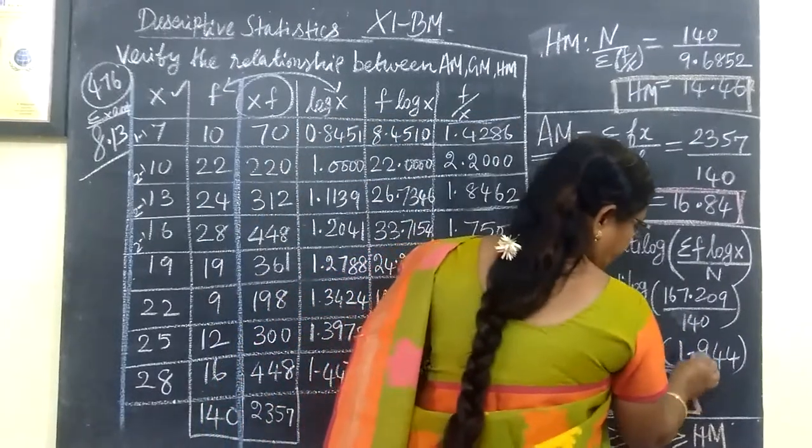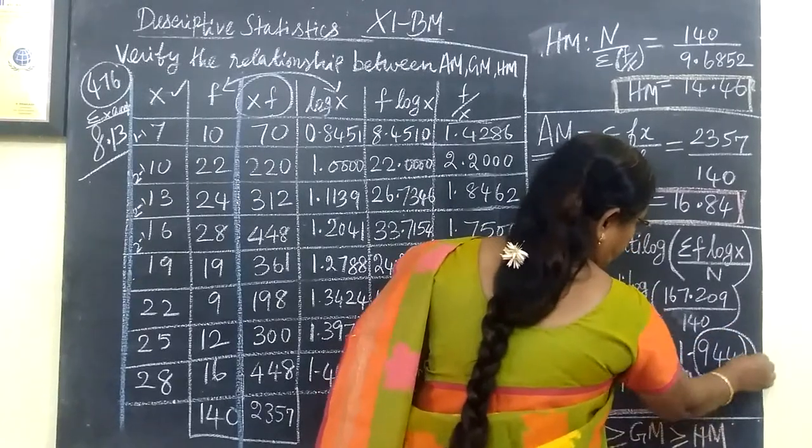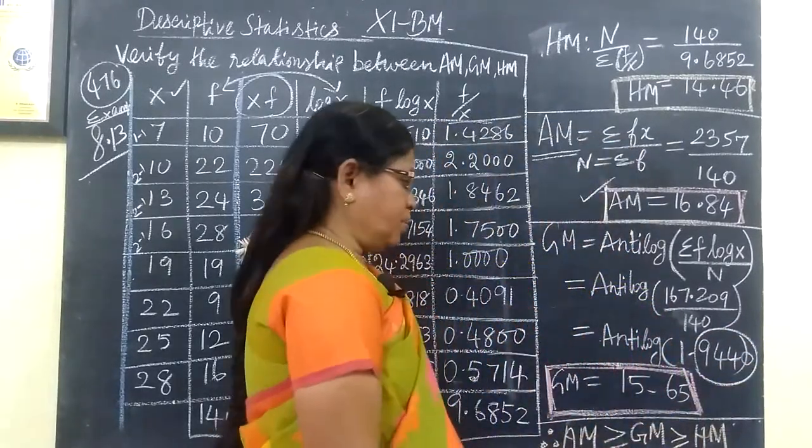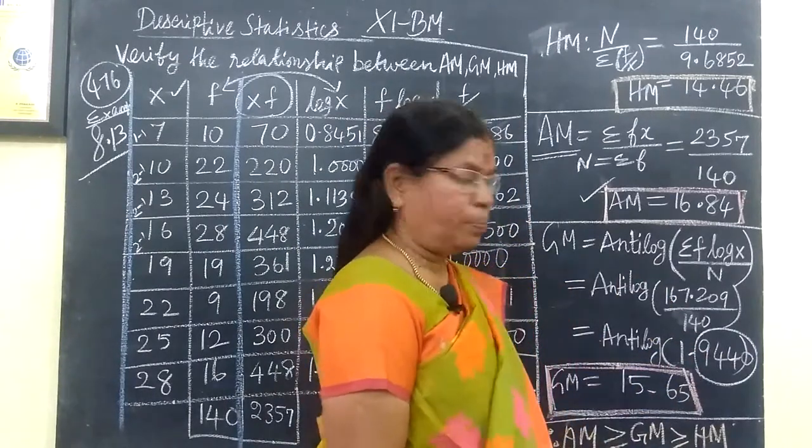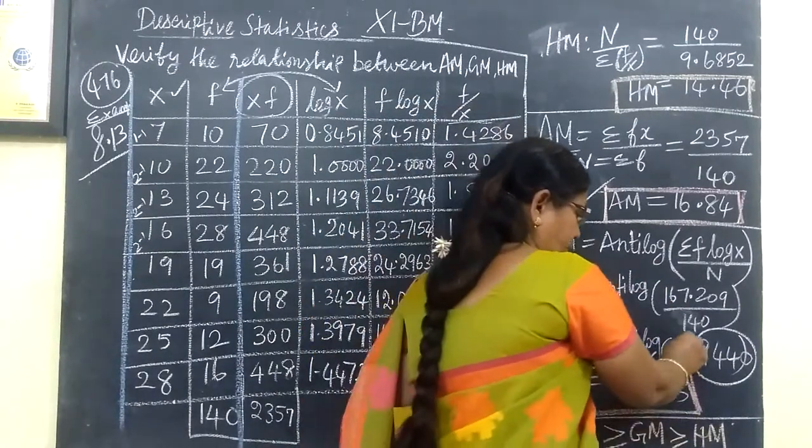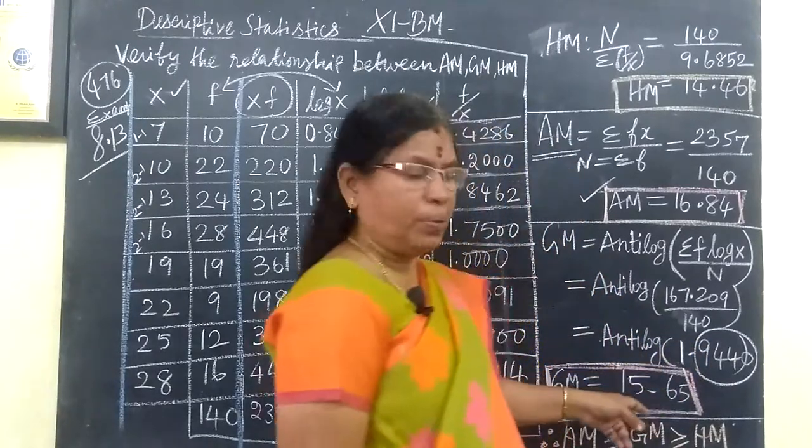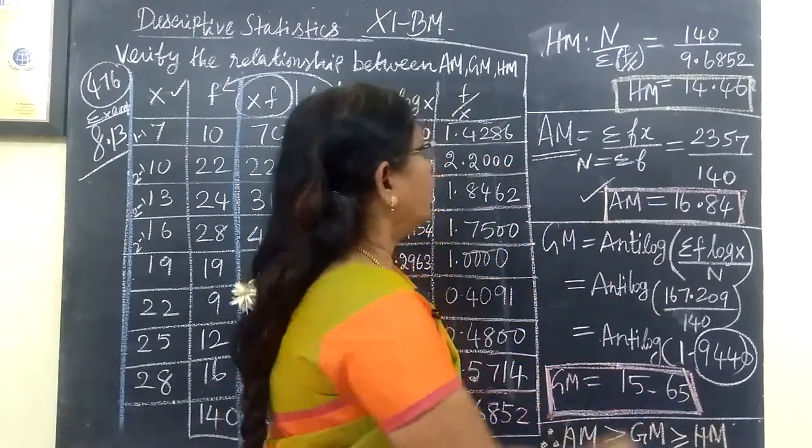Dividing until we find the antilog. For the decimal point placement, we determine the characteristic using number of digits. This gives us the geometric mean.